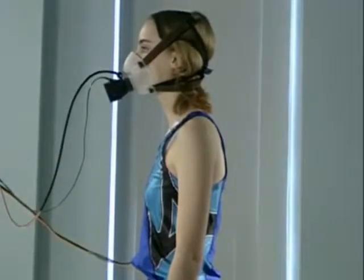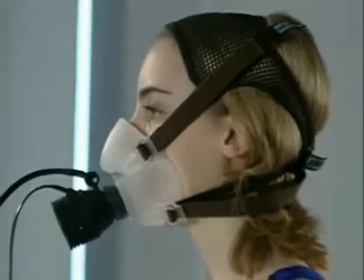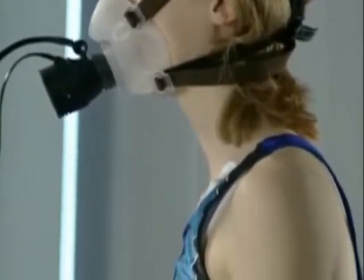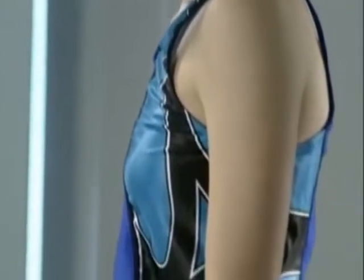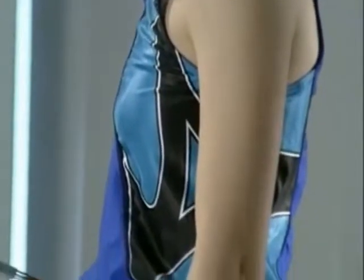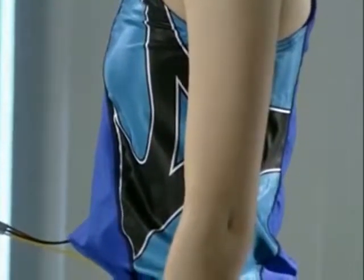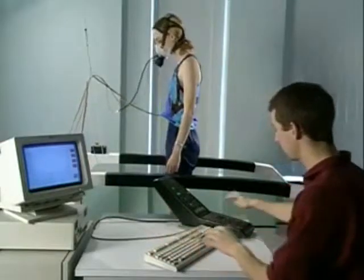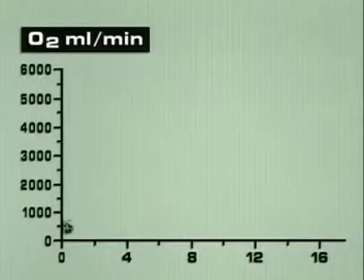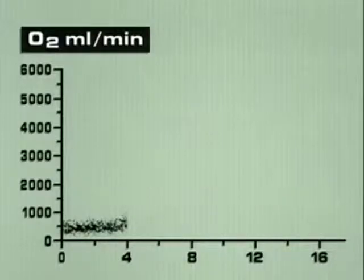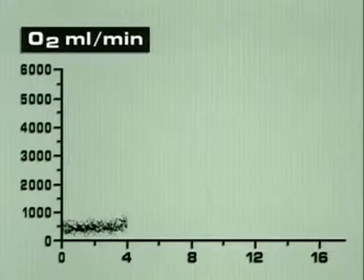So what effect will activity have on Jackie's oxygen uptake? For four minutes, she remains at rest and the computer measures the volume of oxygen consumed. The trace is made up of dots — each dot is a single breath. At rest, the amount of oxygen taken up and used by the body is less than 1,000 millilitres per minute.